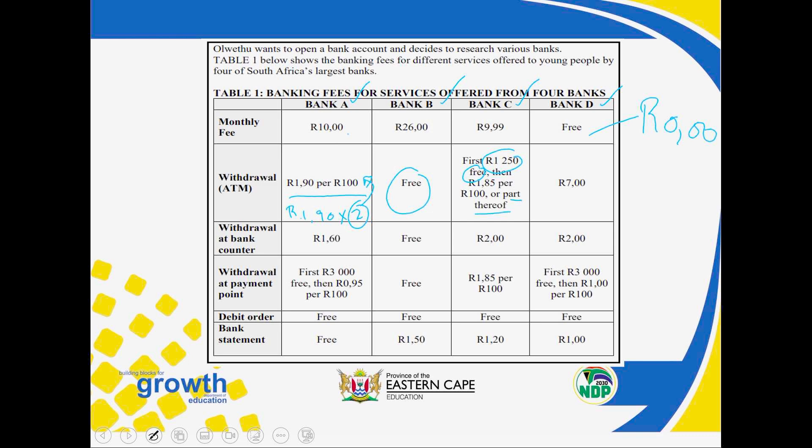'Part thereof' appears again here. 1 rand 85 cents per 100 rand or part thereof means that if you withdraw 150 rand, the first 100 rand is charged 1 rand 85 cents, and the remaining 50 rand is regarded as a full 100 rand, so it is charged another 1 rand 85 cents. That is the meaning of part thereof. Bank D charges a flat 7 rand.